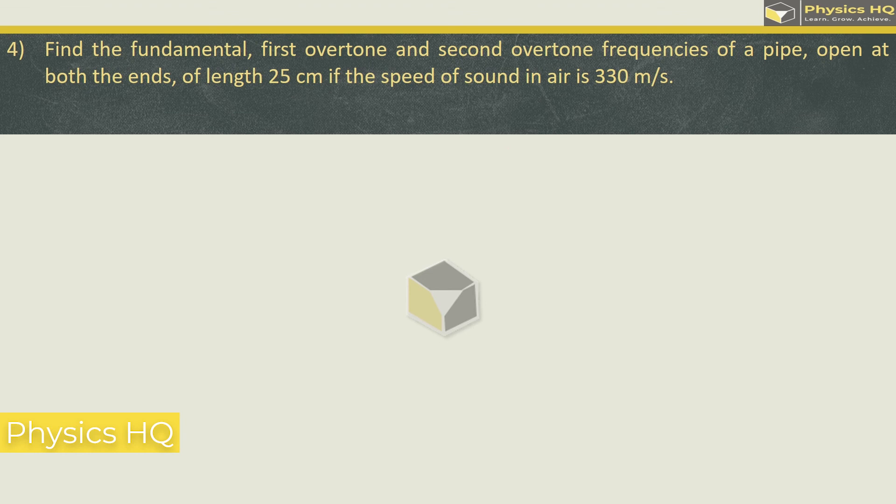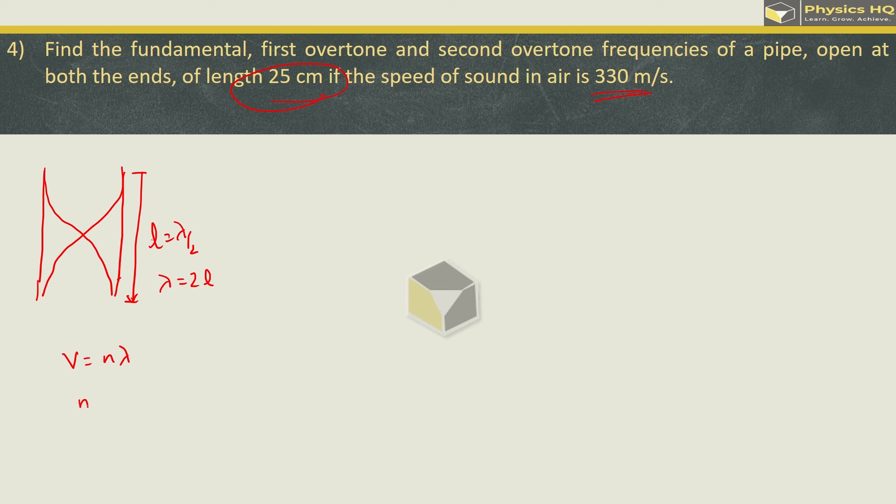Find the fundamental, first overtone and second overtone frequency of a pipe open at both the ends of length 25 cm if the speed of sound in air is 330 meter per second. So we have seen last sum that for a pipe which is open at both ends, for fundamental frequency you will have this kind of waveform. And this length will be equal to lambda by 2, or you can say lambda is equal to 2L. So velocity formula N lambda, we find fundamental frequency N which is given by V by lambda, or you can say V by 2L. This will be equal to 330 divided by 2 into 25 cm, which is 0.25 meter. This is 330 into 100 divided by 50, which gives us 660 hertz. So we have found fundamental frequency.